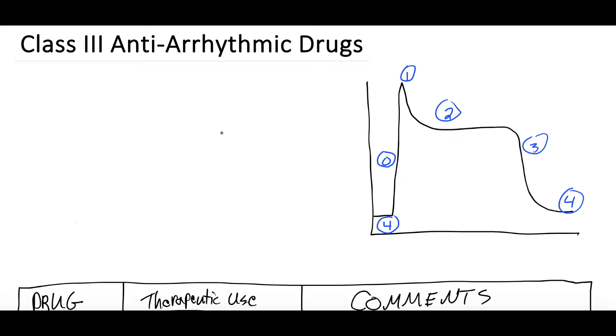So Class 3 antiarrhythmic drugs are commonly referred to as potassium channel blockers. Their primary mechanism, and many of them actually have multifactorial mechanisms, are blocking the potassium channel. The potassium channel is responsible for Phase 3 repolarization, as well as Phase 1 and 2 as well.